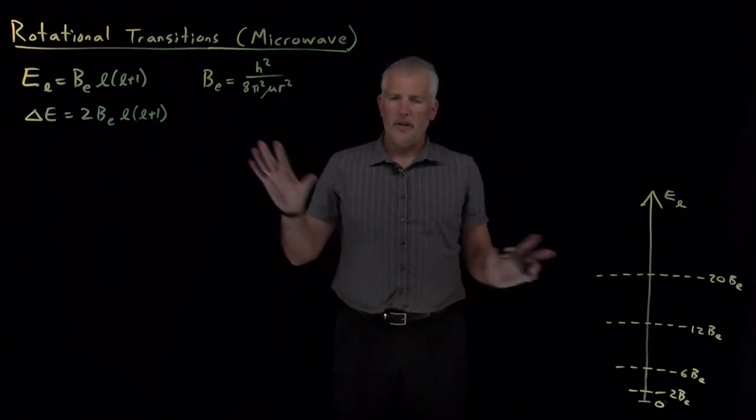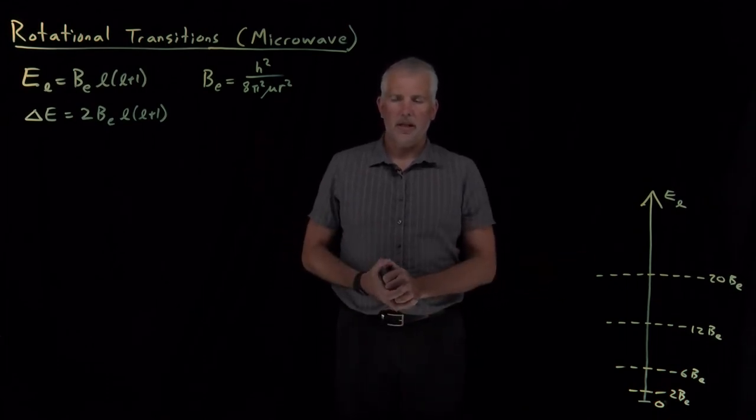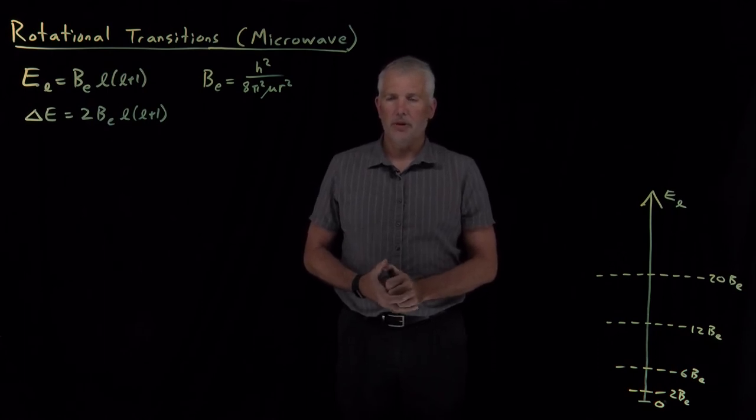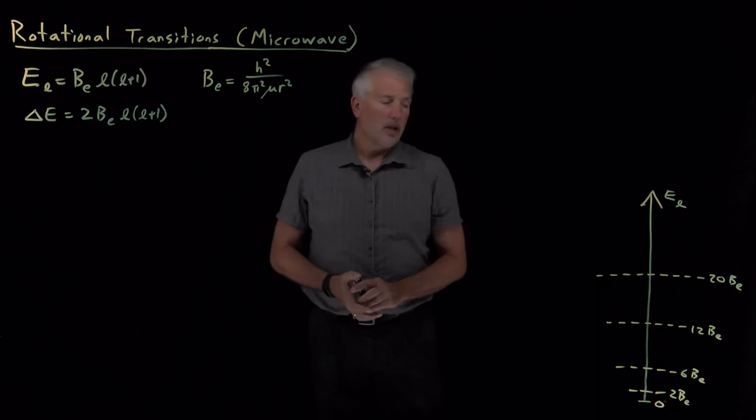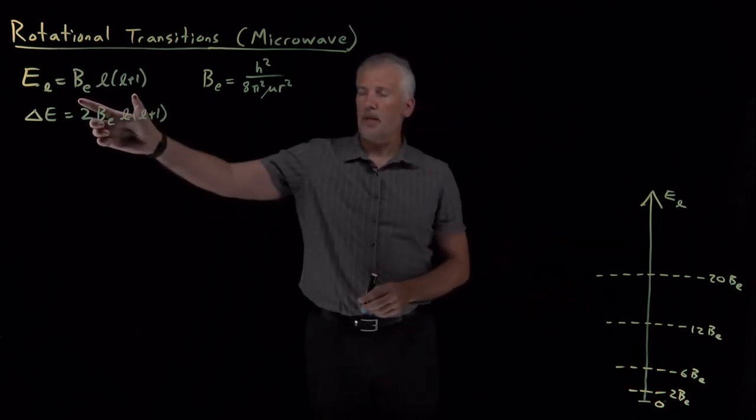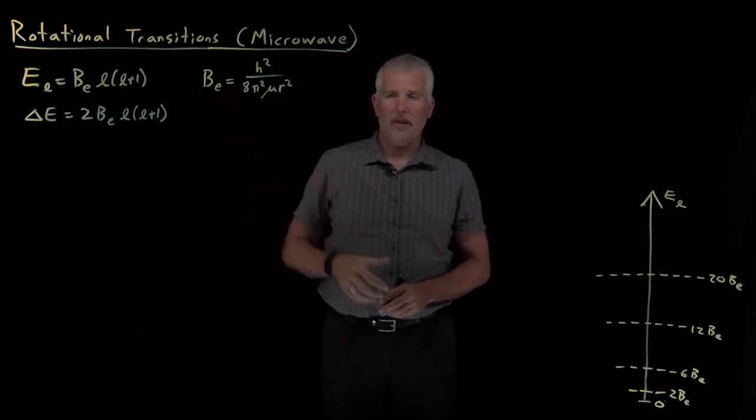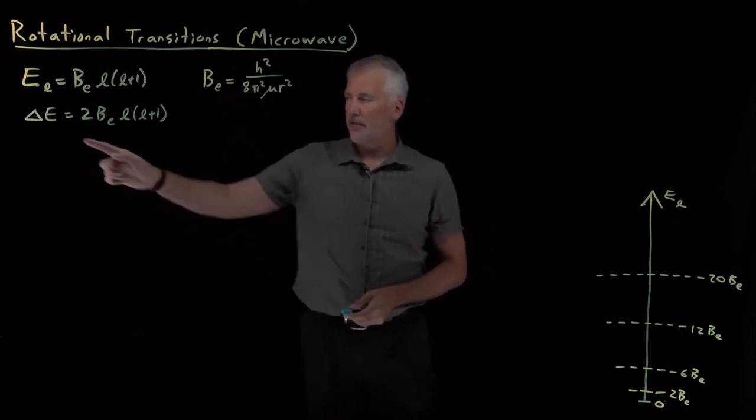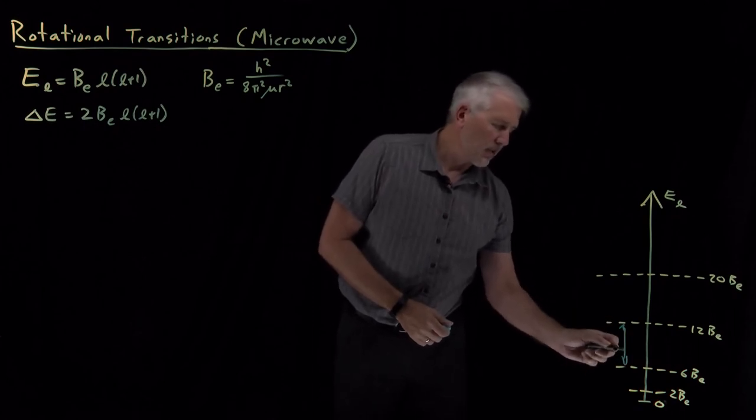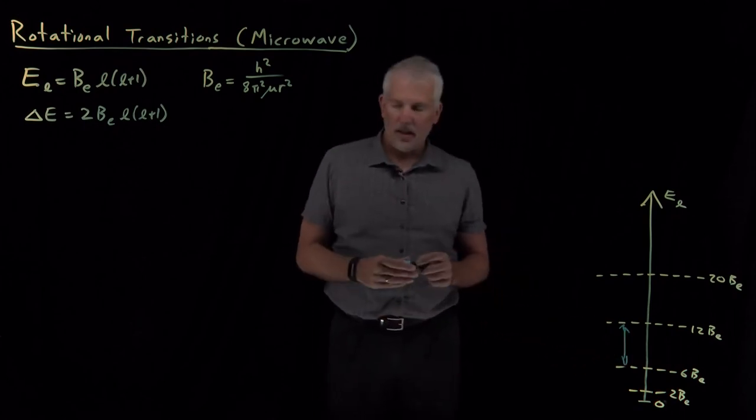Here's a collection of things that we know so far about the energy levels for rigid rotors and for diatomic molecules that we can approximate with the rigid rotor model. We know that there's a sequence of energy levels described by an equation where the rotational constant helps us simplify a lot of these constants.